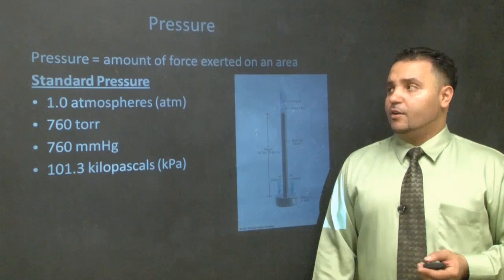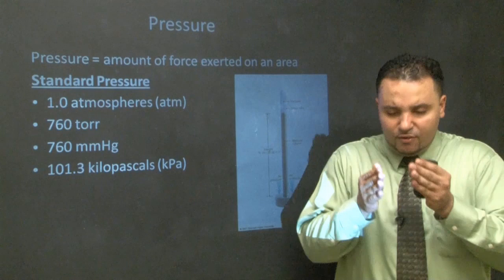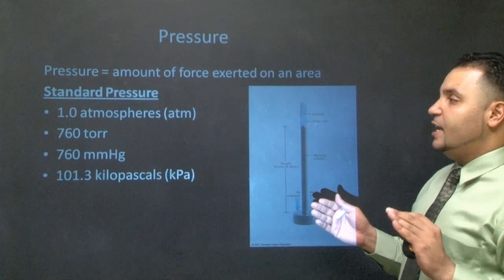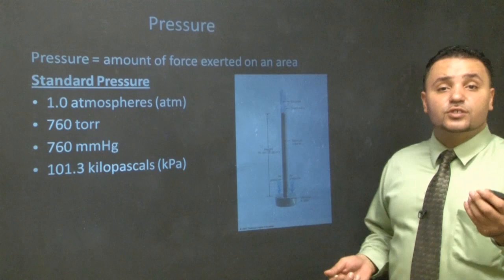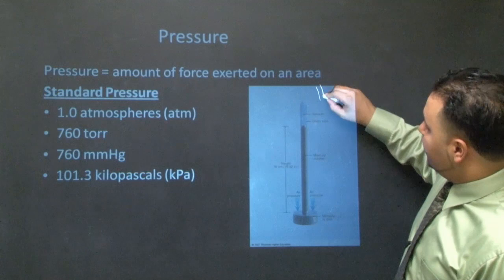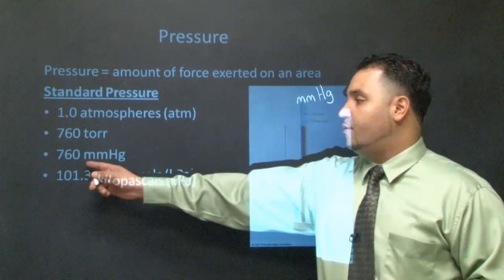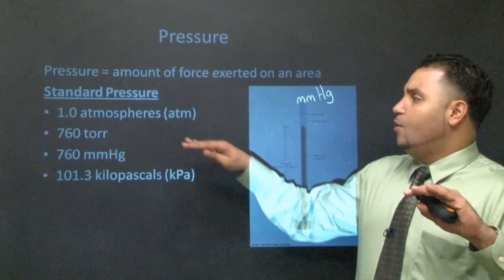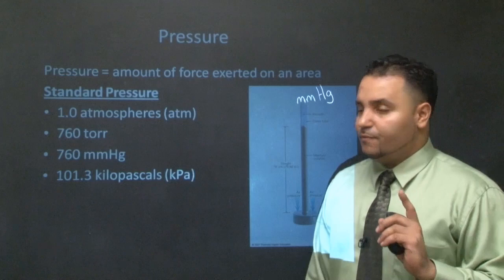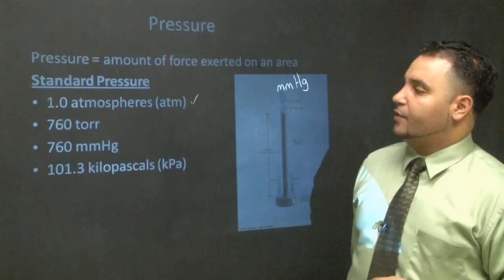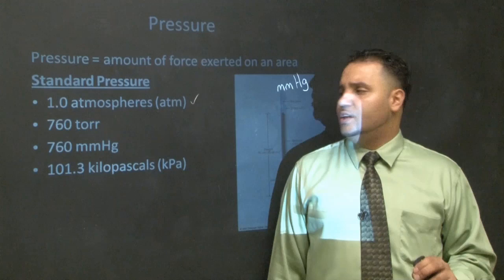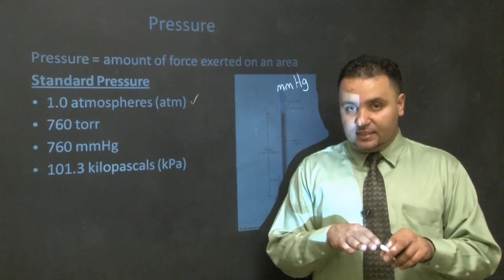Pressure is the amount of force exerted on a given space. A barometer measures pressure using mercury, symbol Hg, in units of millimeters of mercury. Standard pressure is one atmosphere, 760 torr, 760 millimeters of mercury, or 101.3 kilopascals. The one you'll need most is atmospheres — that's what appears in all the formulas. One atmosphere is the pressure at sea level, at zero elevation.